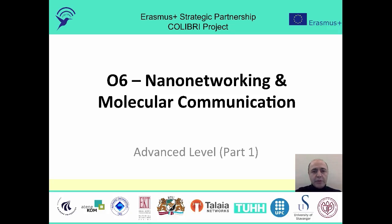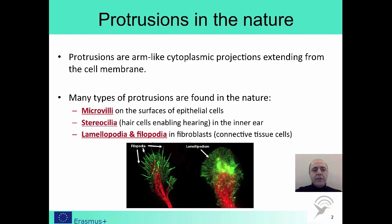Let's start with protrusions. Living cells utilize protrusions to better receive nutrients or information. Protrusions can also be used for other purposes like motility, but our focus will be on the communications perspective. Protrusions are simply projections out of the cell membrane towards a source of nutrients or information so as to improve reception.